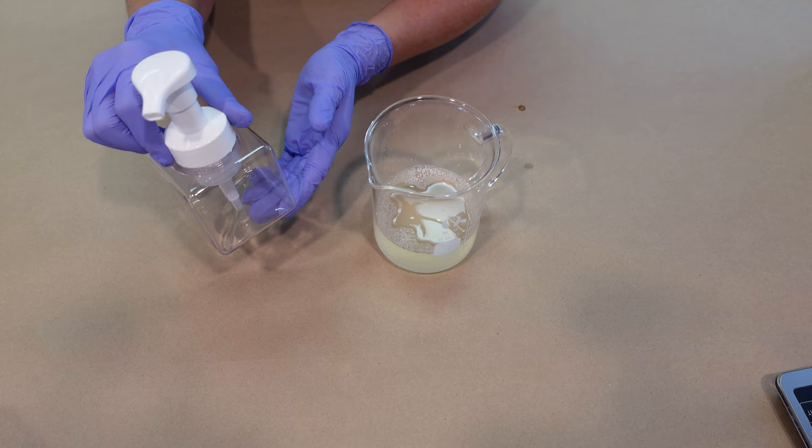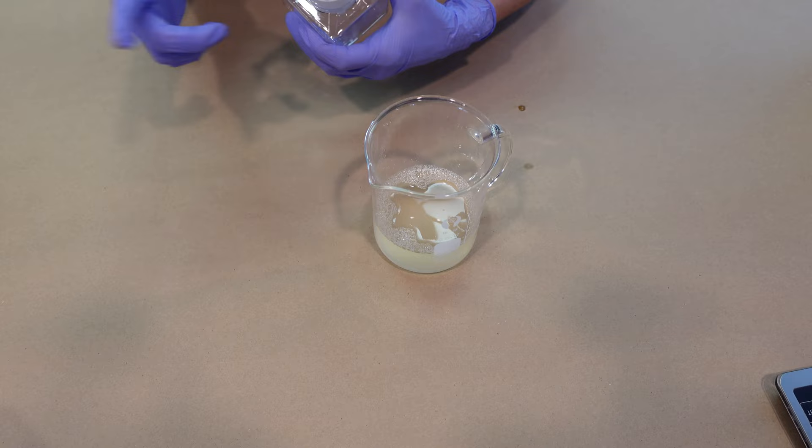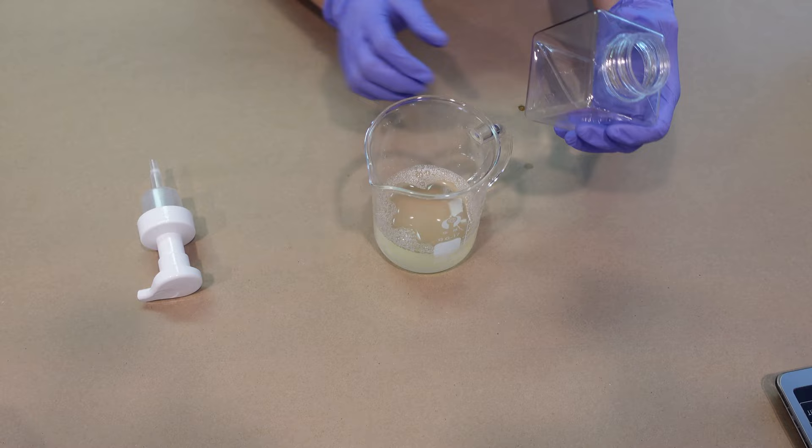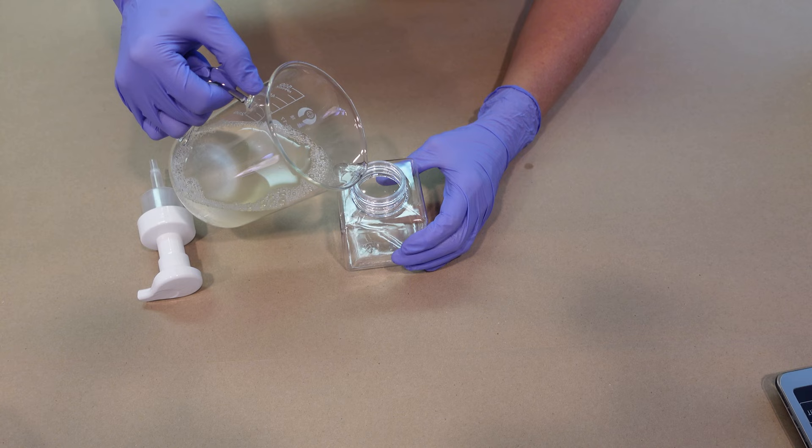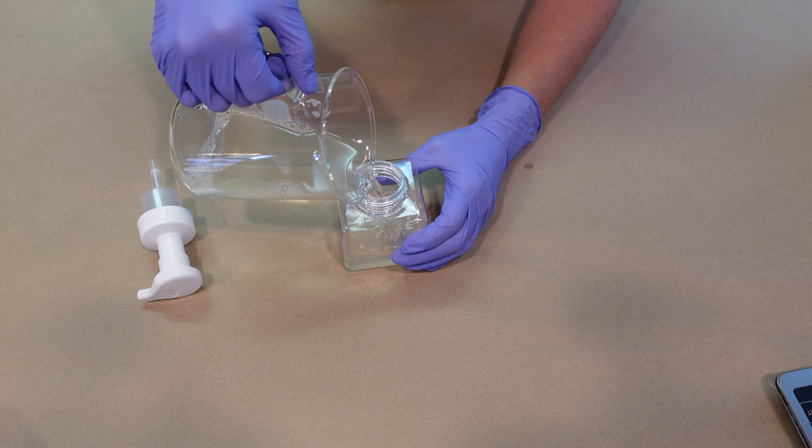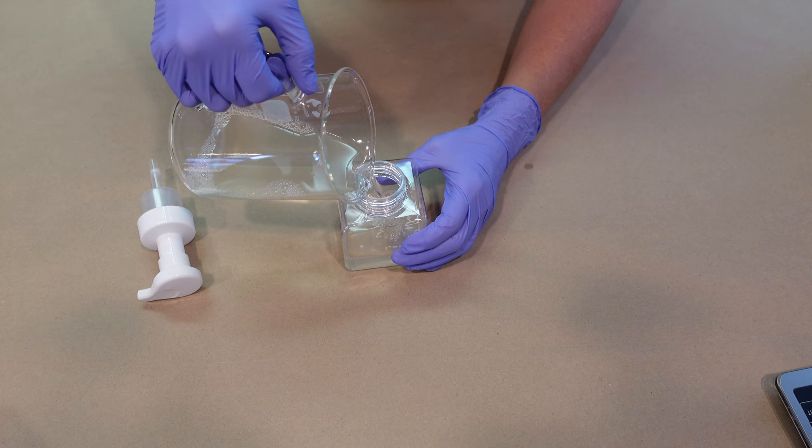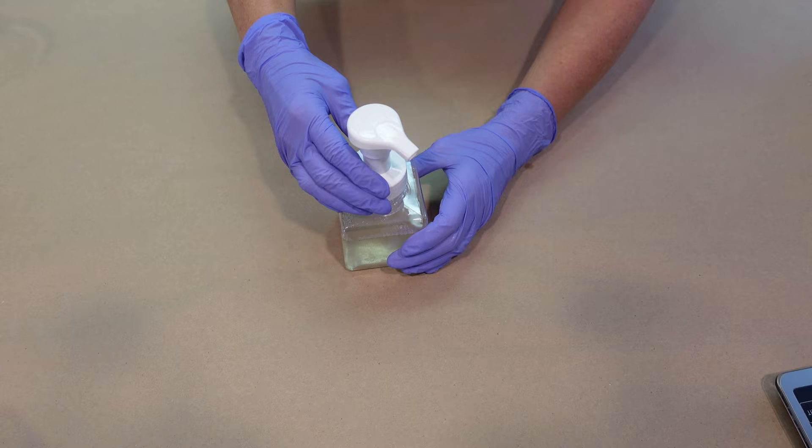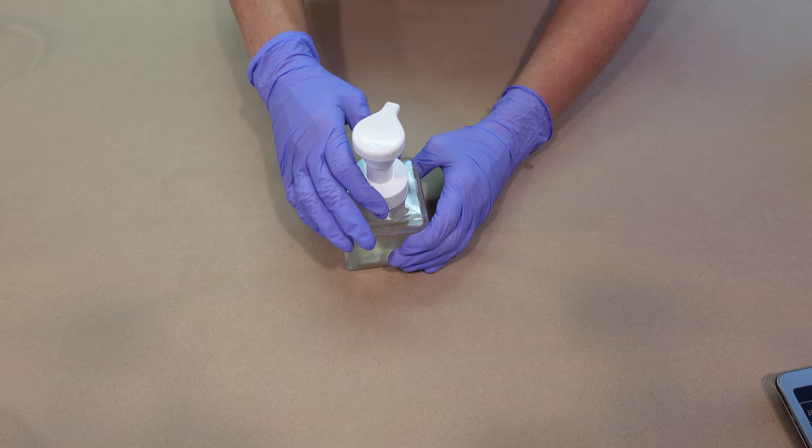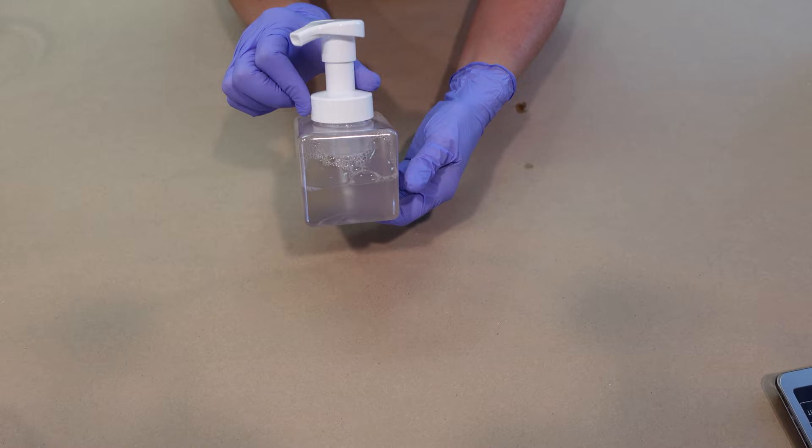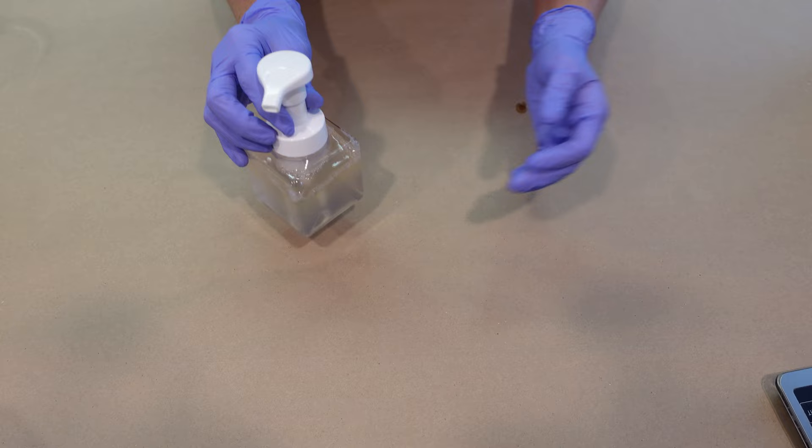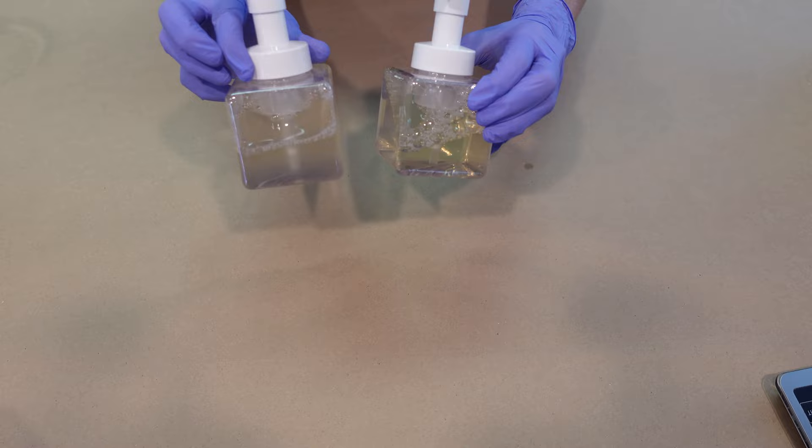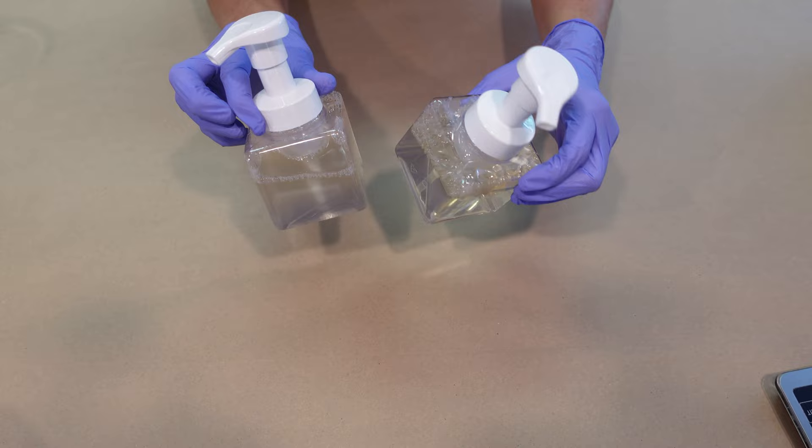I got these cute little cube shaped foamer bottles off of Amazon. I think they're so cute. This is a 200 gram batch that we made. You're just going to carefully pour that in. There you go, it's all bottled up, looking super cute in this little cube container. As you can see, my formula that I just made is still kind of cloudy, but it will go completely clear after about a couple hours or so.